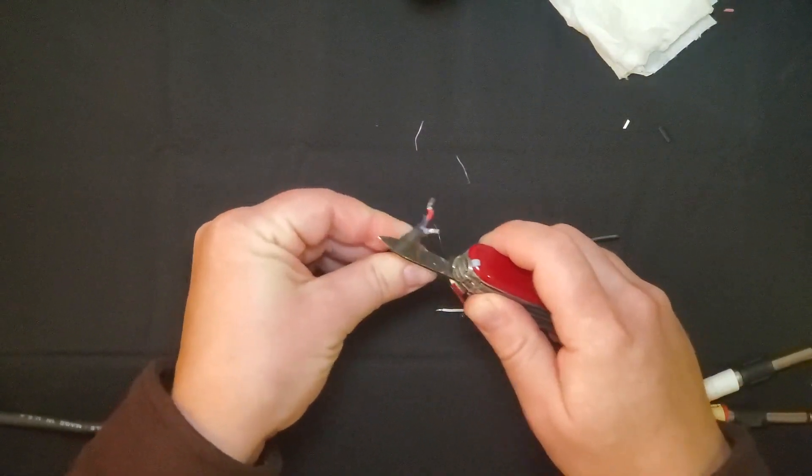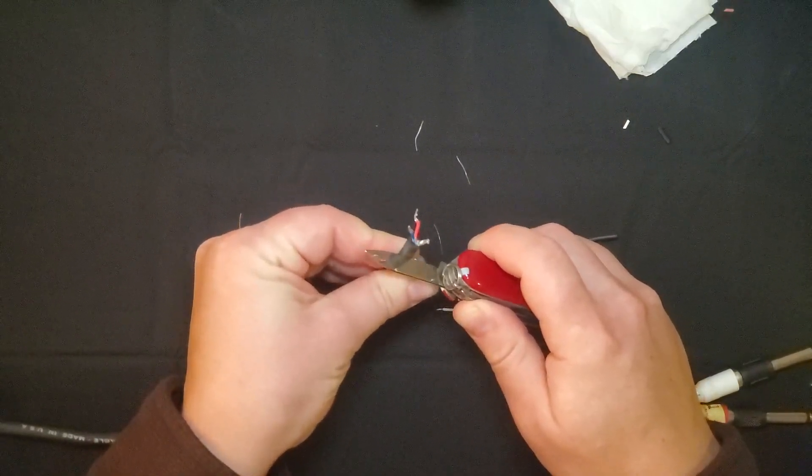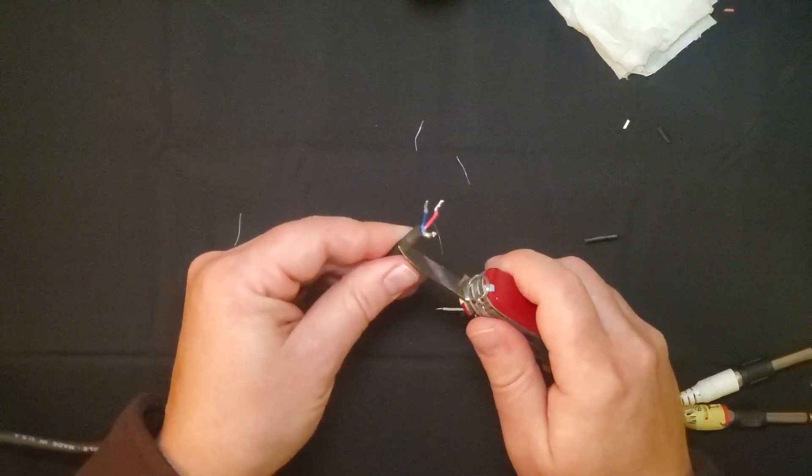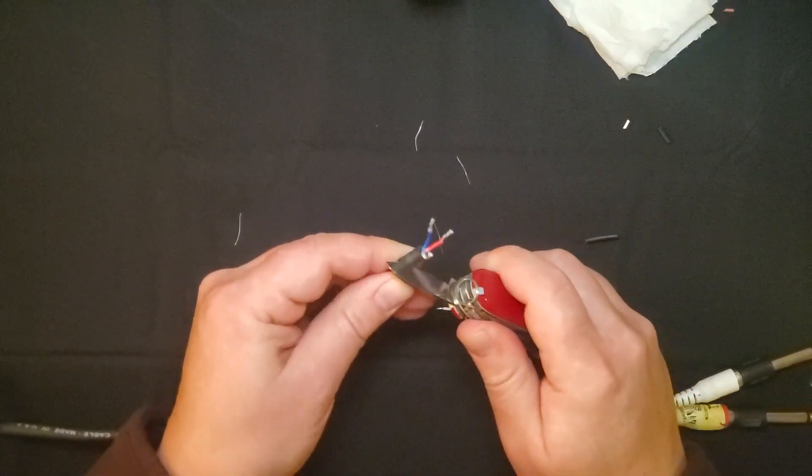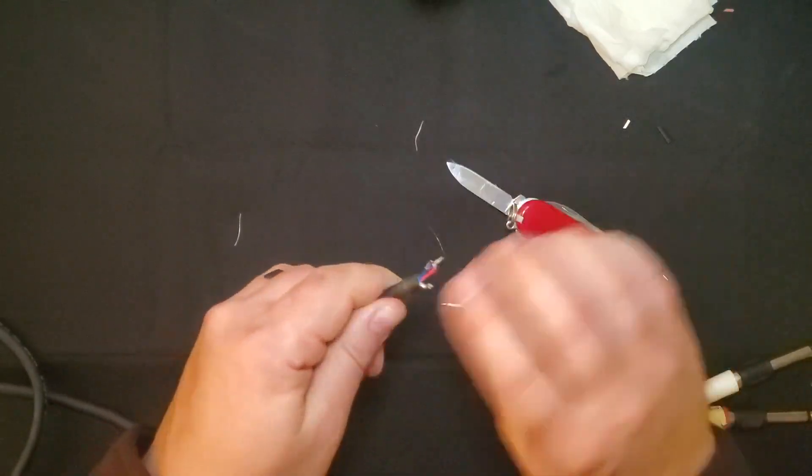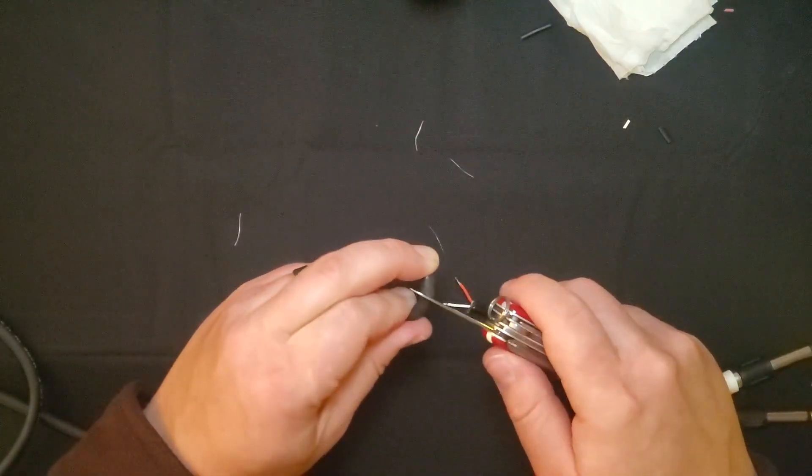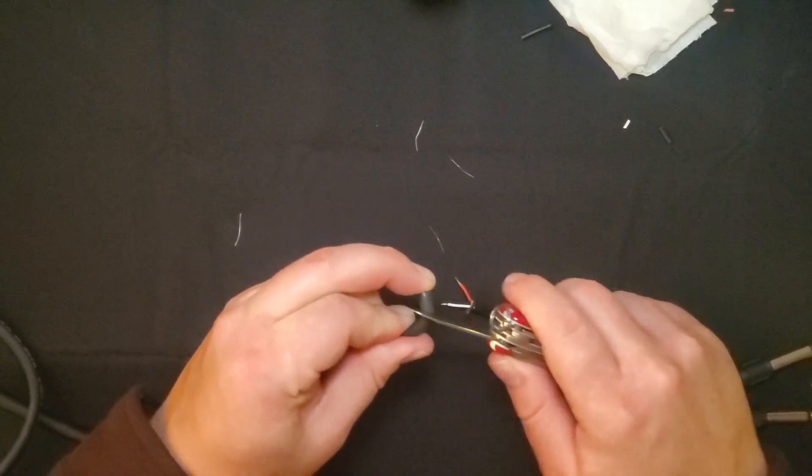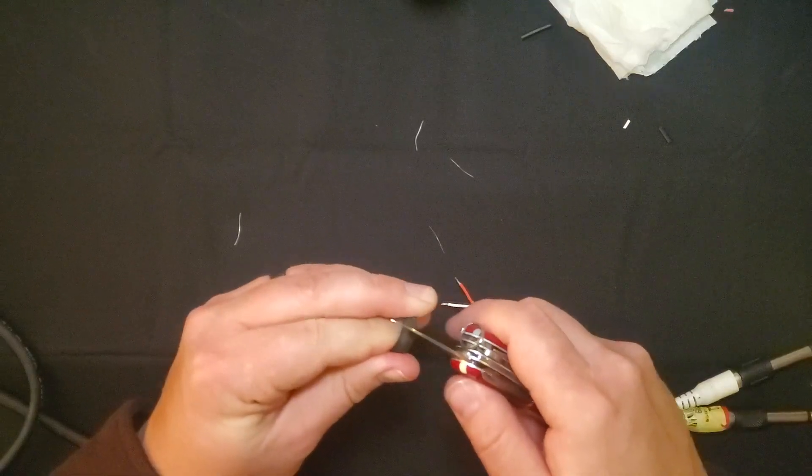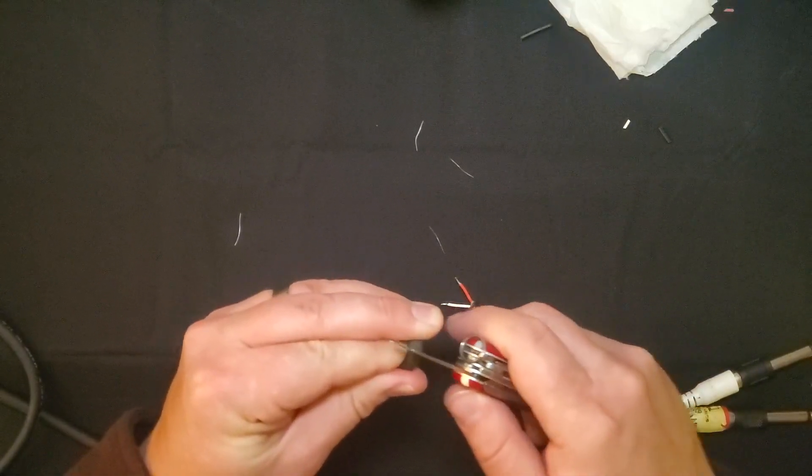I'm removing more of the black sleeve on the stereo wire, just so I can expose more of those individual copper strands. And by gently prizing the wire apart where I've already made an incision, I can just run the knife back and forth to finish cutting through the sleeve.